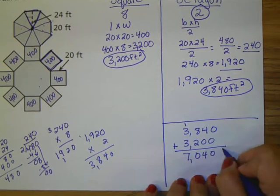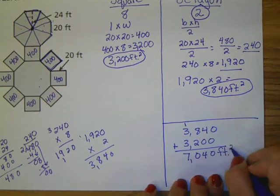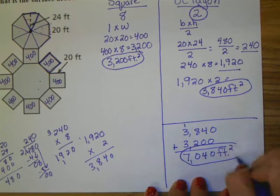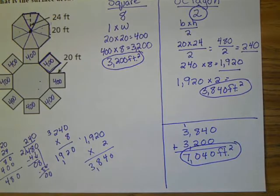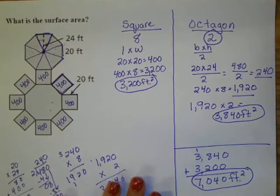I get 7040 square feet. Circle your answer. And that is how you find the surface area for an octagonal prism.